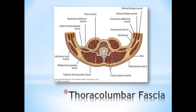The middle layer and the posterior layer completely envelop the erector spinae group including the multifidi. When I look at the anterior fascia and the middle fascia, we can see that it blends again, containing the quadratus lumborum and attaching directly to the transverse process of the vertebrae, and also blends with the intertransverse ligaments — the small ligaments that go from transverse process to transverse process.